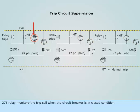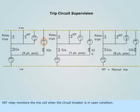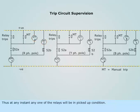27T relay monitors the trip coil when the circuit breaker is in closed condition. 98T relay monitors the trip coil when the circuit breaker is in open condition. Thus, at any instant, any one of the relays will be in picked-up condition.